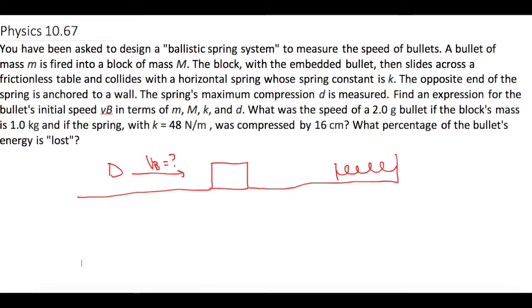Let's first look at the different parts of the problem. We have two parts: the bullet initially hits the block, then they slide, and then they go into the spring. The second part of the problem is after they've hit, and when they convert all of their energy into the spring potential energy.